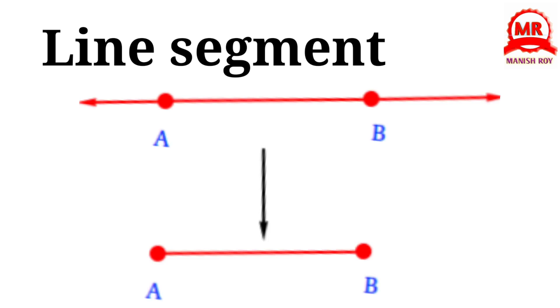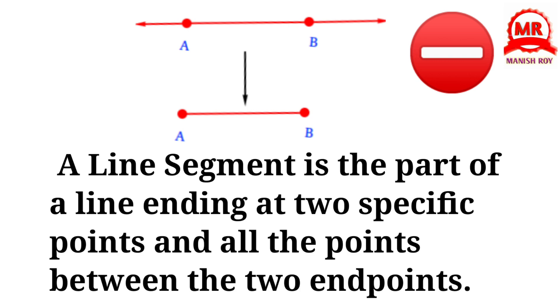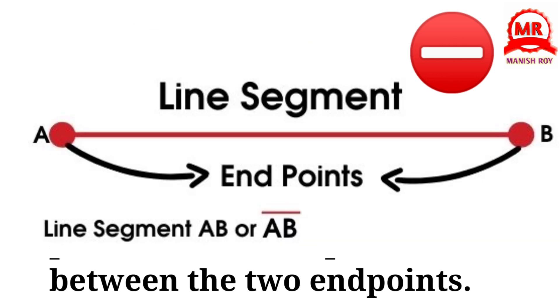Line Segment. A line segment is the part of a line ending at two specific points and all the points between the two endpoints. It is written as line segment AB.